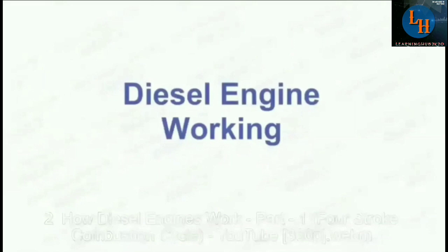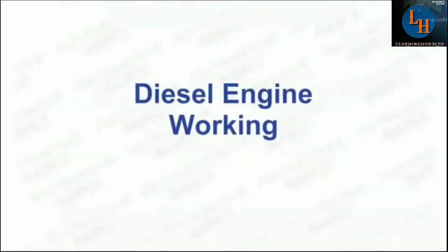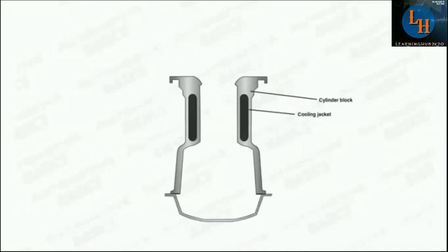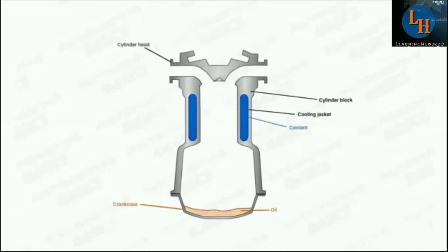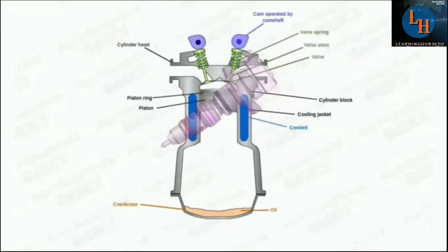Now we understand the working of the four-stroke diesel engine. We have understood the working of the petrol engine; now this is the diesel engine. The difference is that instead of a spark plug, a fuel injector is used. Due to compression ignition, ignition takes place — it is also called a compression ignition engine. It is used in heavy vehicles like trucks and also in medium cars. The video also shows different engine components and the cam mechanism in detail.